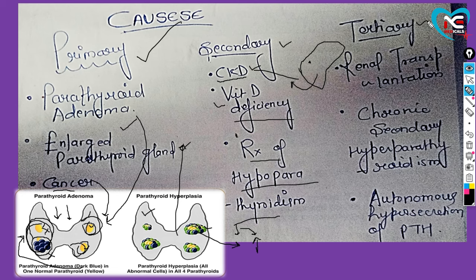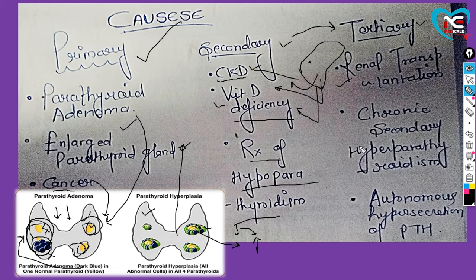Tertiary hyperparathyroidism mein kya ho raha hai ki jab aapka secondary handle nahi ho paata aur yeh saari conditions severe hoti rahti hain toh woh tertiary mein change ho jaata hai. Iske alawa renal transplantation - kidney transplant ki gayi ho, ho sakta hai ki transplanted kidney vitamin D ko response nahi de pa rahi, negative feedback hi nahi bana pa rahi. Chronic secondary hyperparathyroidism mein jo chronic ki problems thi woh ab bahut zyada hyper ho gayi hain. Aur autonomous hyper secretion of PTH - yani parathyroid hormone apne aap hi continuous secret hota ja raha hai.